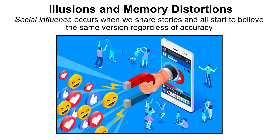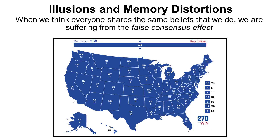During this national election cycle, it is fairly easy to find examples of social influence in a variety of media sources. Terms like fake news and alternate reality have become commonplace. Social influence is the eighth type of memory distortion. Imagine the number of people who will be surprised when their candidate for President of the United States does not win. Because we are ingrained in our own beliefs, we are often surprised that everyone doesn't share our view. This is the false consensus effect.